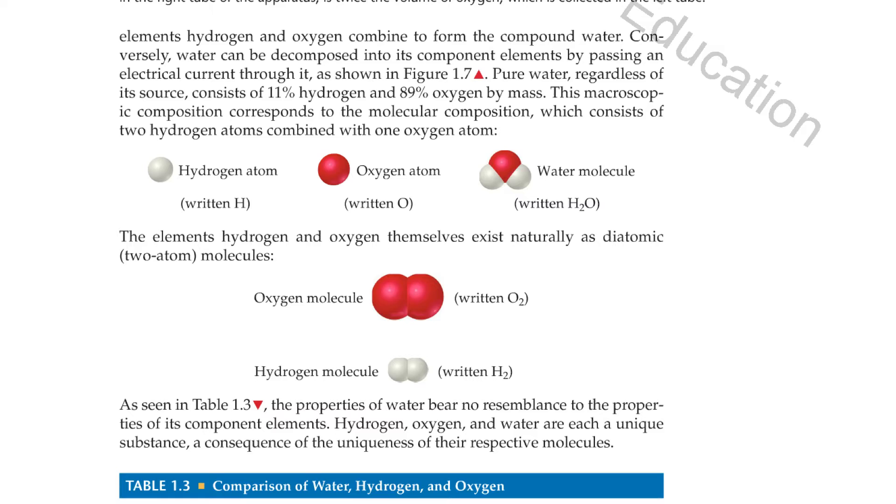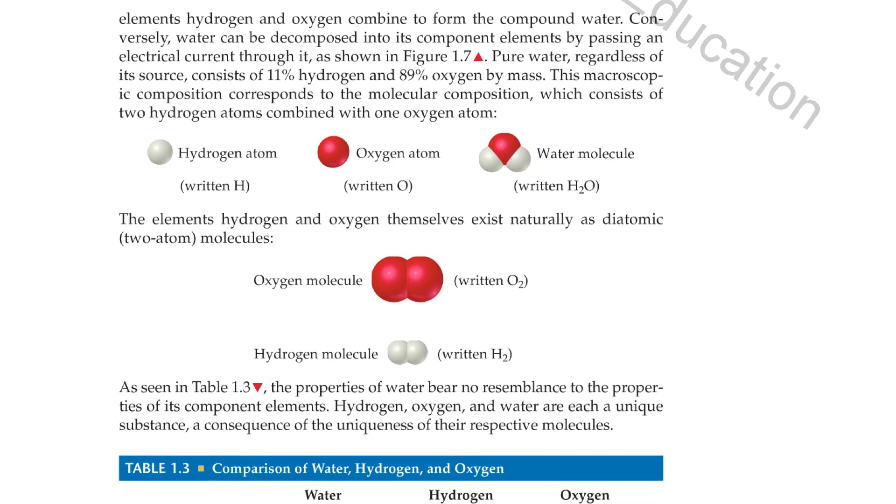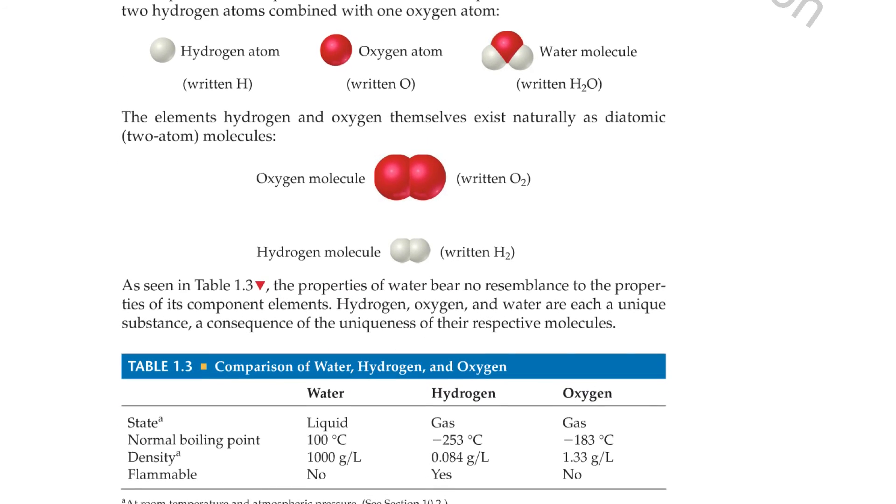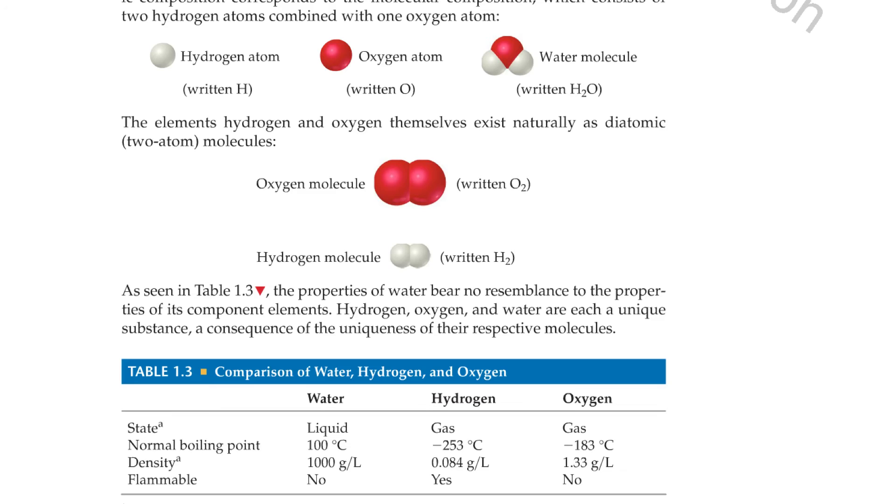The elements hydrogen and oxygen themselves exist naturally as diatomic or two-atom molecules. As seen in Table 1.3, the properties of water bear no resemblance to the properties of its component elements. Hydrogen, oxygen, and water are each unique substances, a consequence of the uniqueness of their respective molecules.